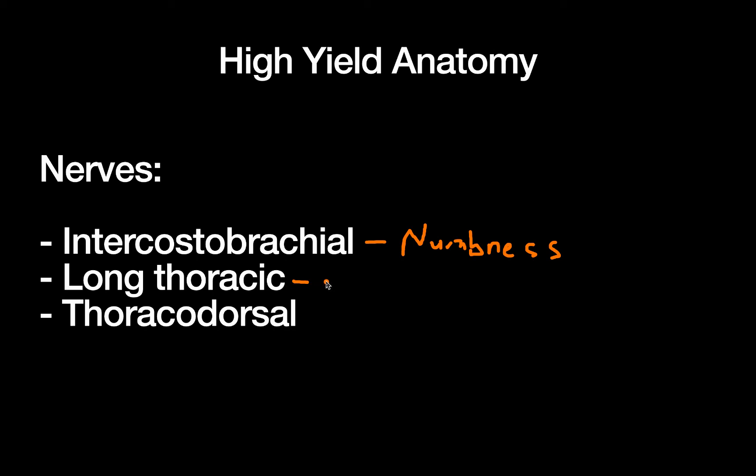The long thoracic, this should be a classic Step 1 question. That innervates the serratus anterior and injury to that will lead to a winged scapula.